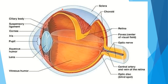This is the cornea. And this is the choroid. Inside the sclera layer is the choroid, which supplies blood to the eye. This is the retina. The light-sensitive rod cells and cone cells are located in the retina.